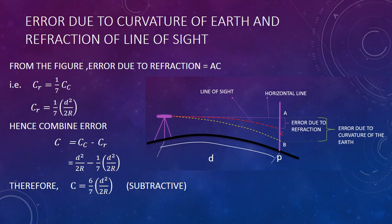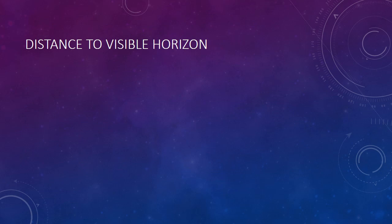The combined error due to curvature of the earth and refraction of the line of sight is given by: C = (6/7) × d²/(2R). This is how you calculate the combined error for curvature of the earth and refraction of the line of sight.